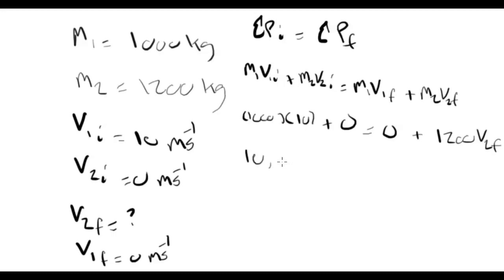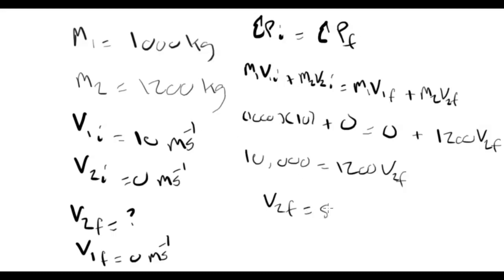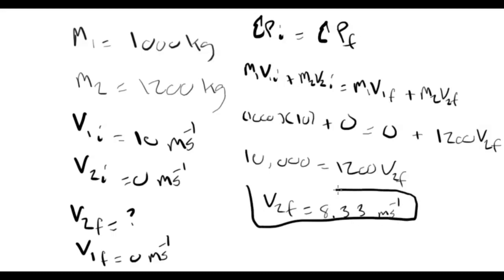This gives us 10,000 equals 1,200 times V2f. So V2f equals 10,000 divided by 1,200, which is 8.33 meters per second. That is the answer to the first question.